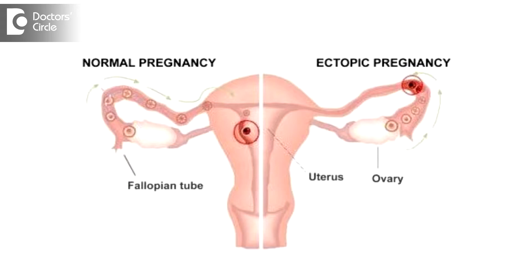Ectopic pregnancy is also known as extra-uterine pregnancy. It is a state when the pregnancy is implanted, or a fertilized ovum is implanted, outside the uterine cavity. The incidence of ectopic pregnancy is around 1-2% of all pregnancies. It can happen in women of any reproductive age group, and every year about 1 million new cases are being reported in India.